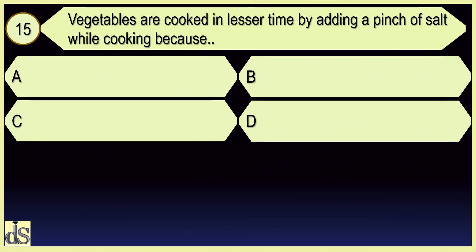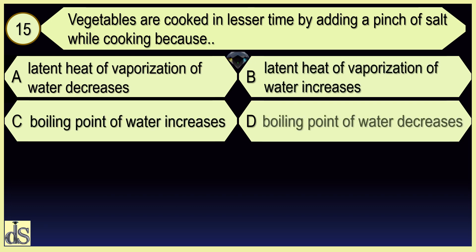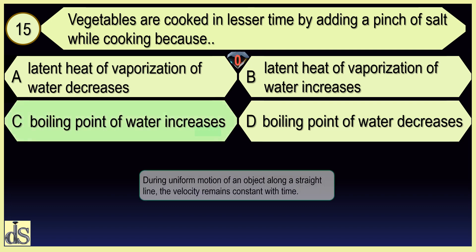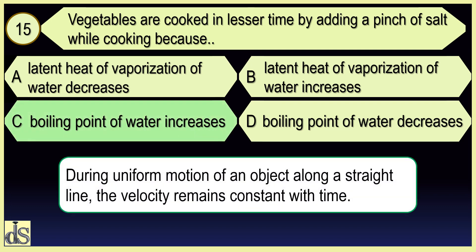Vegetables are cooked in lesser time by adding a pinch of salt while cooking because the boiling point of water increases.